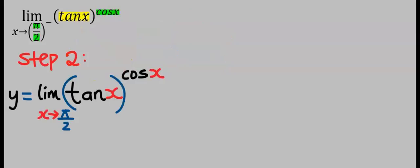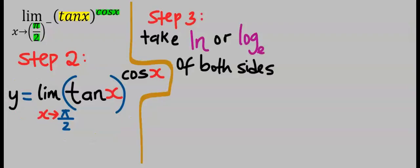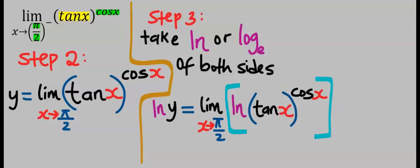In step number 2, we're going to let y be equal to the given question. Here, I'm just letting out the superscript because it doesn't change the question or the function. Step number 3: We're going to take the natural log of both sides. Next, in step number 4, we're going to take this cos x at the powers and bring it to the back of the natural log. Hence, step number 3 will become this.